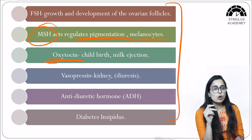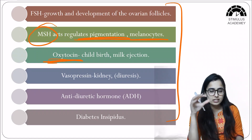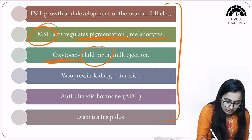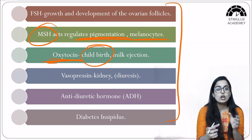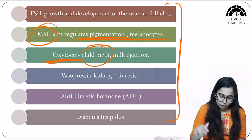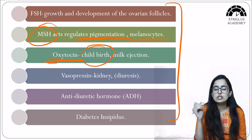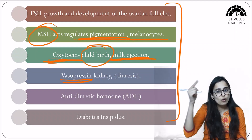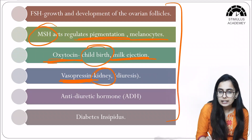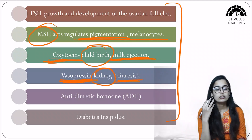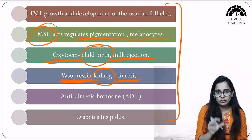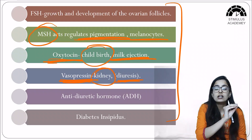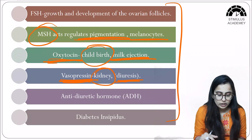Oxytocin is released by the neurohypophysis but produced in the hypothalamus; it is transported and stored in the neurohypophysis before release. The function of oxytocin is contraction of uterine smooth muscles, which helps in childbirth, and it also triggers the milk ejection reflex. Vasopressin, also known as ADH, is similarly secreted by the neurohypophysis but formed in the hypothalamus.